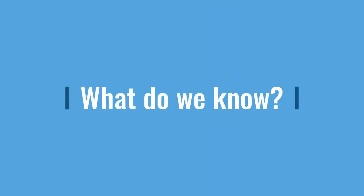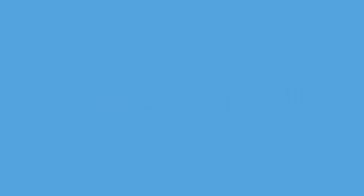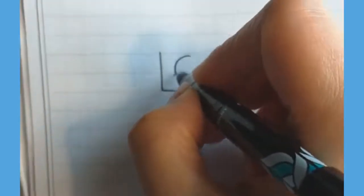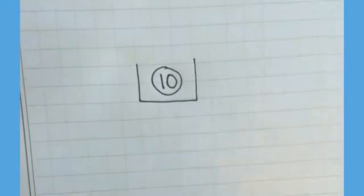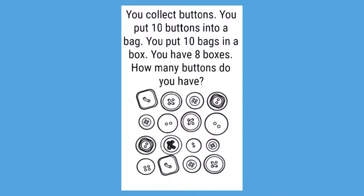So the first step is, what do we know about the story problem? I know that I put ten buttons into a bag, so I'm going to draw ten buttons into a bag, and I want you to draw with me. So here is my bag, and here is my ten buttons. Great job, guys. The ten represents the ten buttons that you put in the bag.